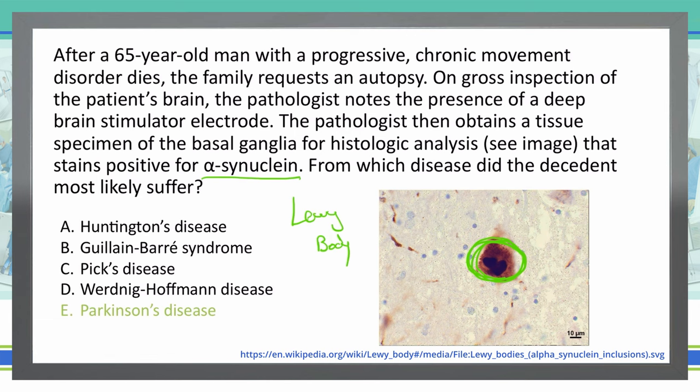As a side note, this patient had a deep brain stimulator electrode, which can be used to help decrease movement disorder symptoms. That would be why he had a deep brain stimulator electrode — due to the Parkinson's disease.